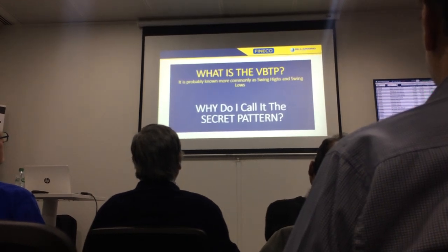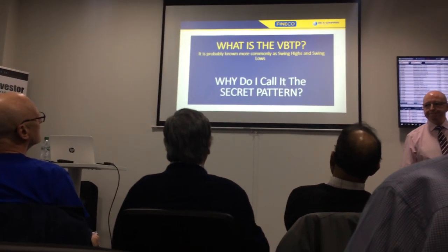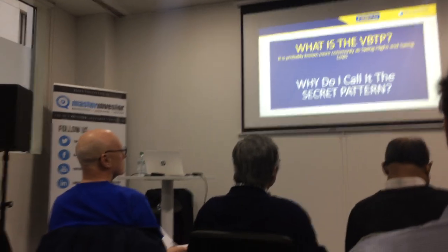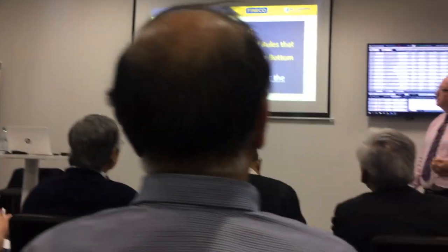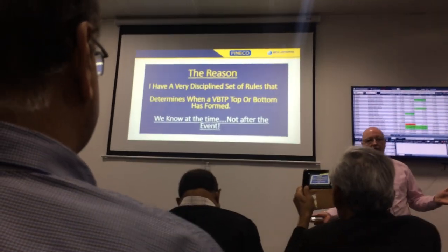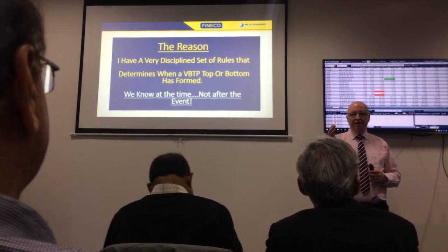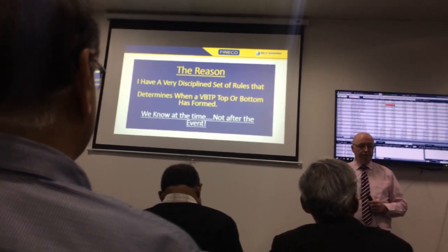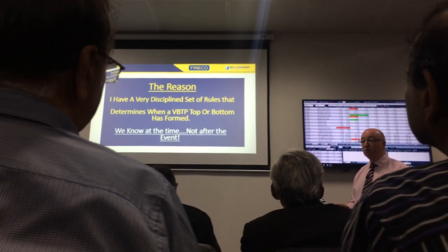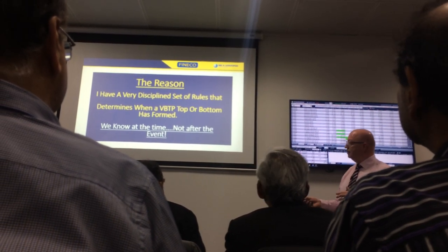So what is the vertical bar trading pattern trend? It is more commonly known as swing highs and swing lows. I call it the vertical bar trading pattern simply because I have a very disciplined set of rules that determines when a vertical bar trading pattern top or bottom has been formed. Those of you that have been trading the markets can go into any chart on any time frame and pick out highs and lows, swing highs, swing lows — but that is all after the event. We want to know what it is at the time of the event, to get in on that market as that new trend is beginning.